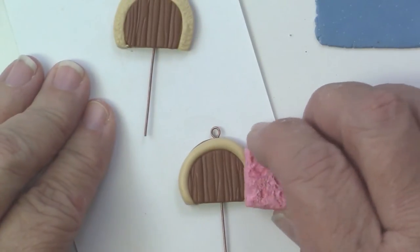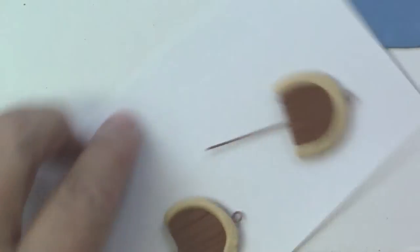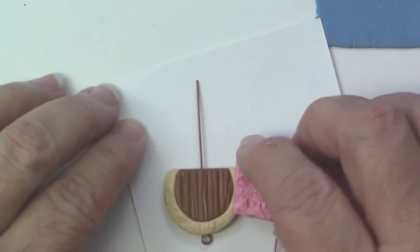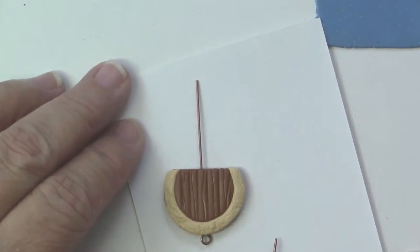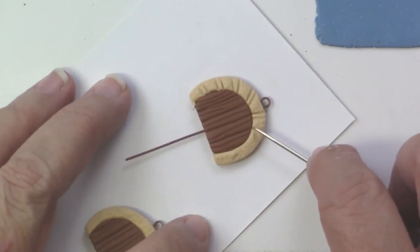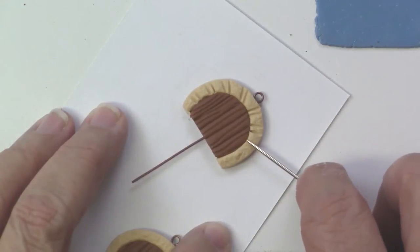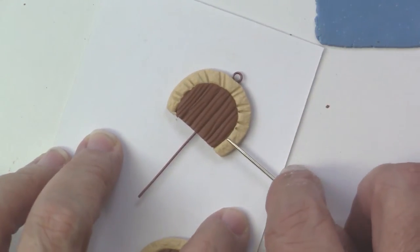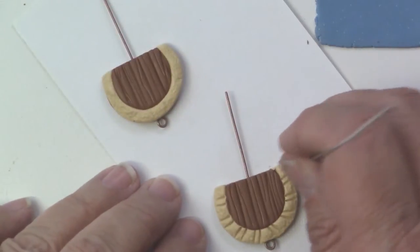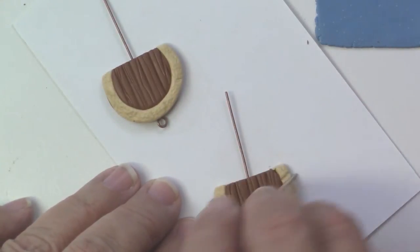You need to look around your house and see what kind of tools you might have to make textures. There's so much variety. Use your eyes to find things that would make cool textures. I've got my needle tool and I'm just making little stone.